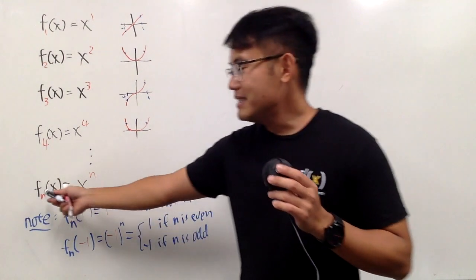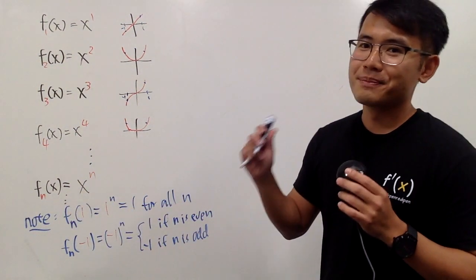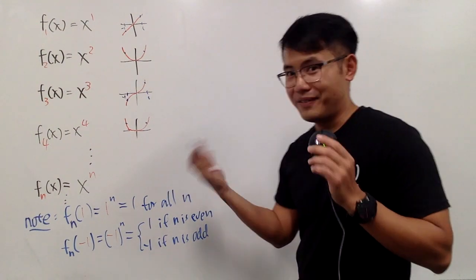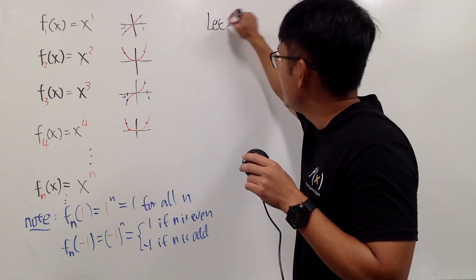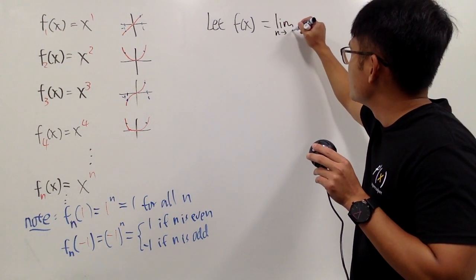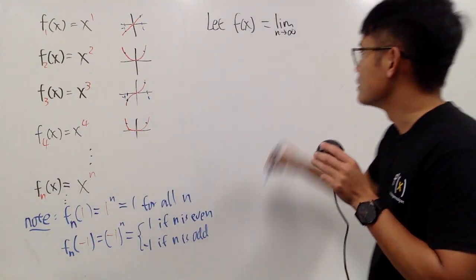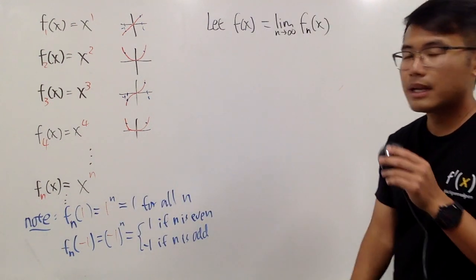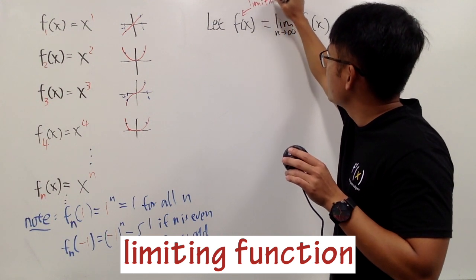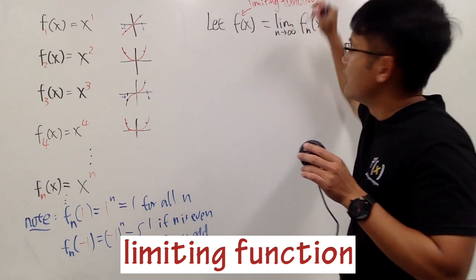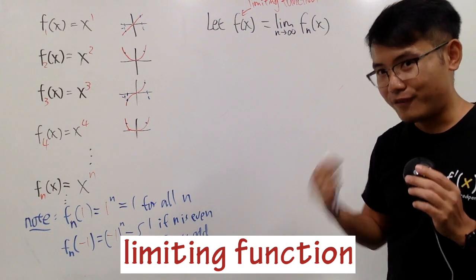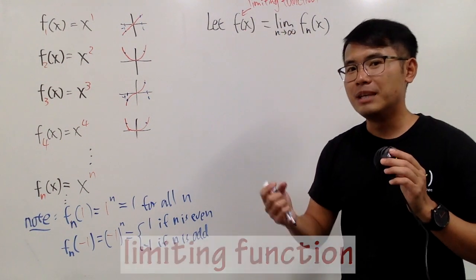So we are doing this infinitely many times. This is the formal way to define infinity — you have to take the limit. So I will define f of x (no n) to be the limit as n goes to infinity of fn of x. This f of x has a name: it's called a limiting function. And we are not really talking about the limit of the function itself — this is technically the limit of the sequence of functions, and usually people just call this the limiting function.